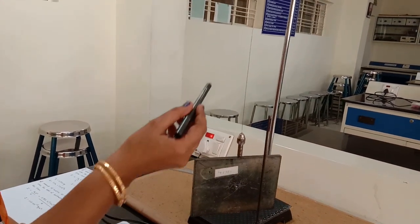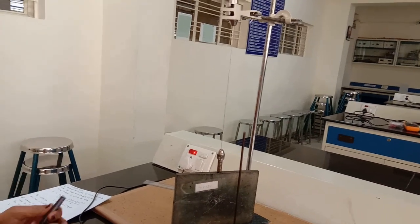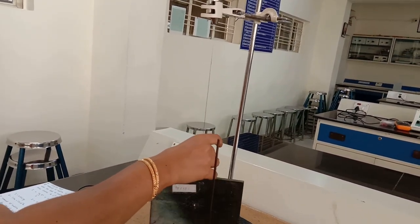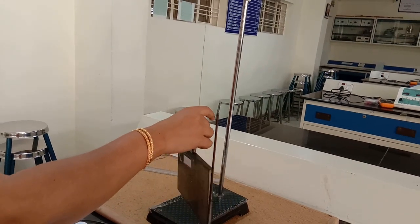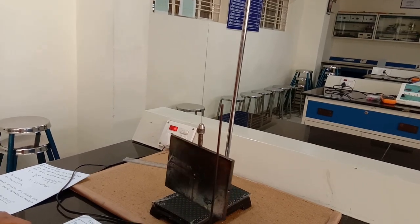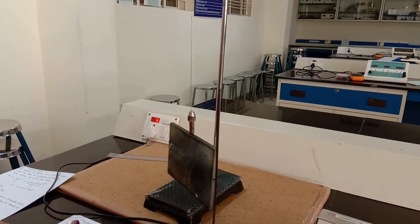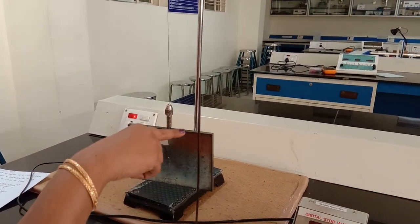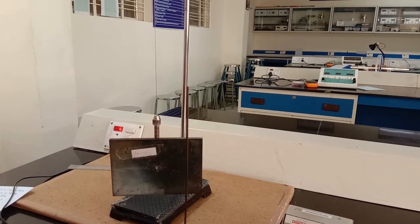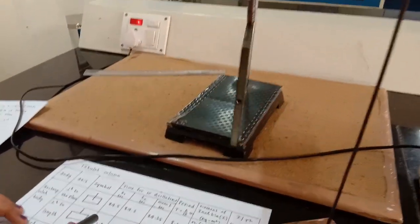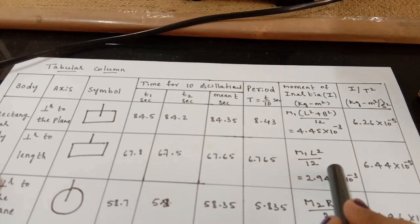Now we have connected the rectangular plate with the axis of suspension perpendicular to the length. Twist the lower end of the wire so that the body undergoes torsional oscillations. Take a reference point and count 10 oscillations, noting the time. Repeat for the second trial, take the mean value of T, find the period, and since we know the I value, calculate I/T².